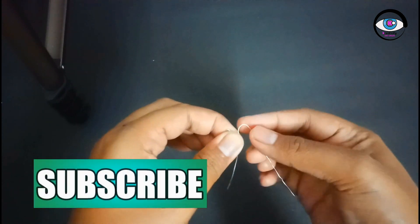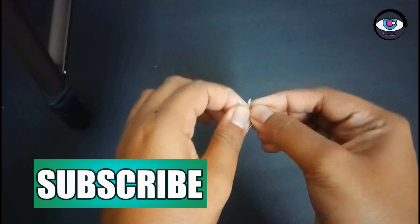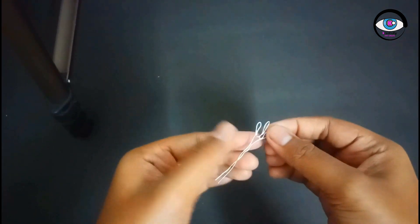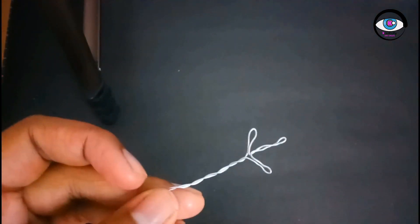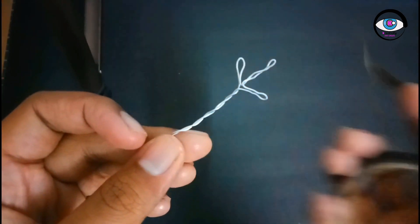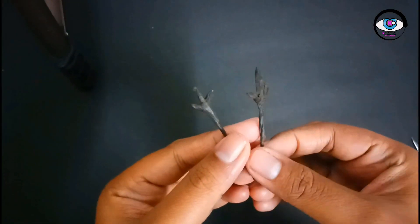At first, take a thin wire like this and make it into the shape of hands by bending. Cover it with brown tape. Make one more like that.